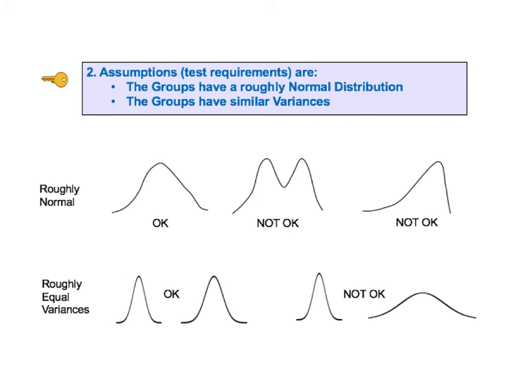KTU number two lays out the two assumptions that the data must meet if ANOVA is to be used. The data distribution for each group must be roughly normal, and there should be roughly equal variances. ANOVA is fairly tolerant about meeting these requirements, but if these assumptions are not even roughly met, then the non-parametric Kruskal-Wallis test can be used instead.